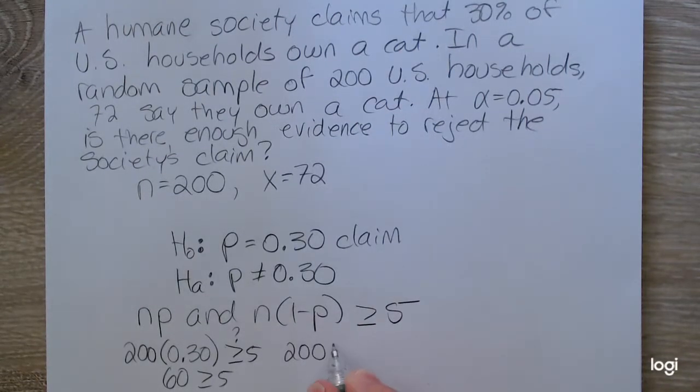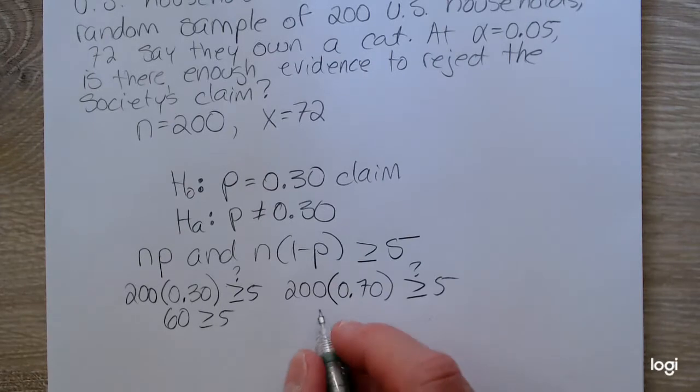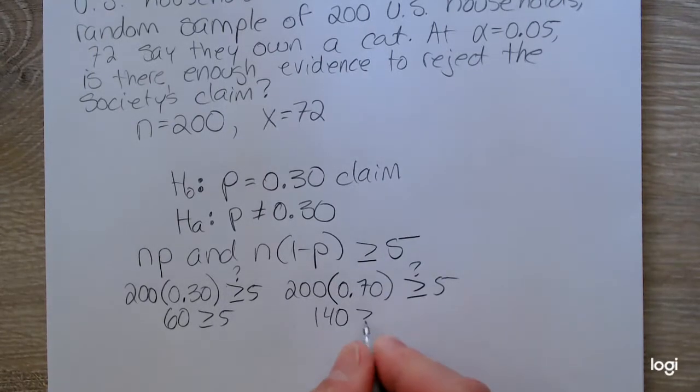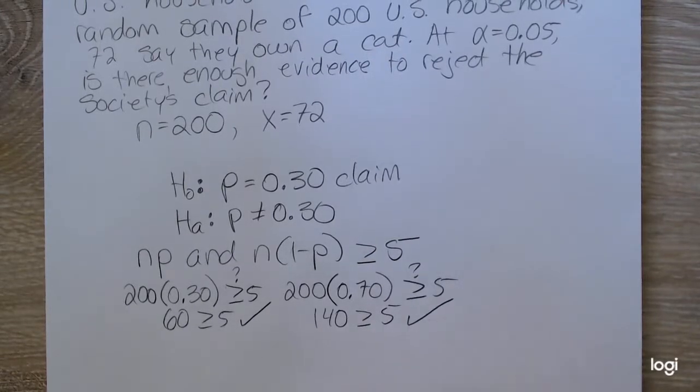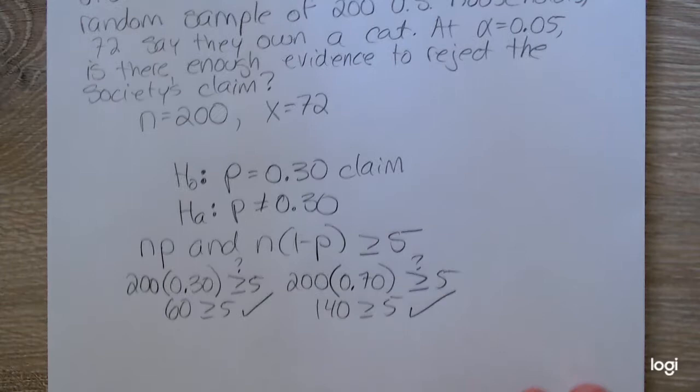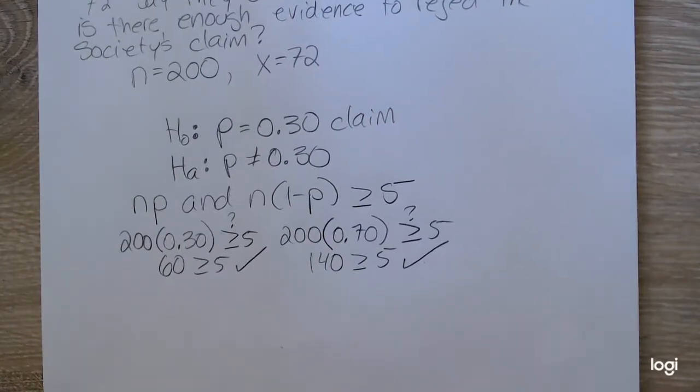Checking the other product, if P is 0.3, then the complement to that will be 0.7. Is that at least 5? Well, 70% of 200 is 140.